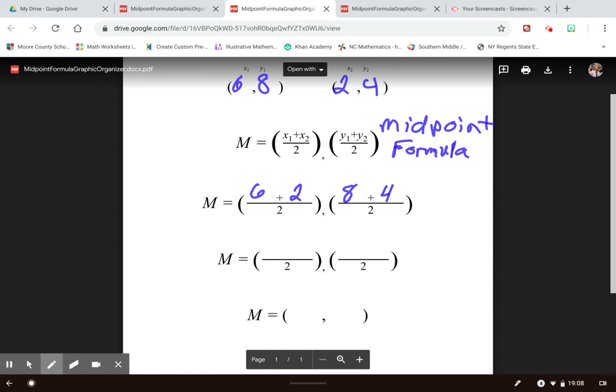So 6 plus 2 is 8, 8 plus 4 is 12. So 8 divided by 2 is 4, and 12 divided by 2 is 6. So that means the midpoint of these two points is the ordered pair 4, 6.